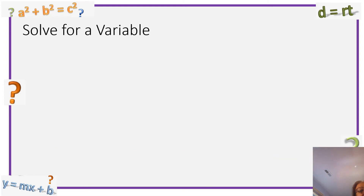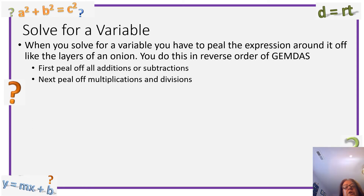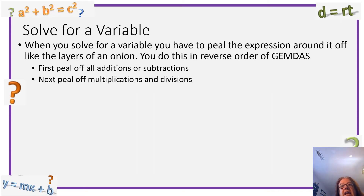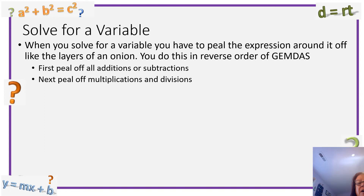Solve for a variable. You will be asked to solve for a variable on this test. When you solve for a variable, you have to peel the expression around it off like the layers of an onion — your variable is in the very center. You do this in the reverse order of GEMDAS: peel off additions and subtractions first, then multiplications and divisions, then any exponents or groupings. You won't have to deal with exponents or groupings on this test; it doesn't get that complicated.